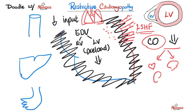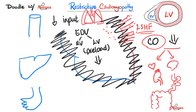Less blood to the kidney causes acute kidney injury — pre-renal azotemia. Less blood to the small intestine causes mesenteric ischemia. Less blood to the large intestine causes ischemic colitis.